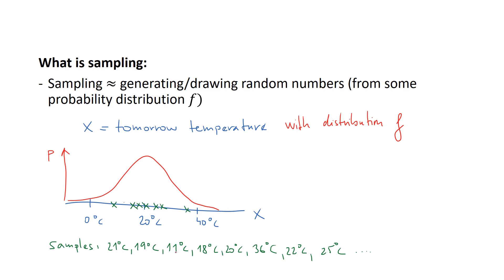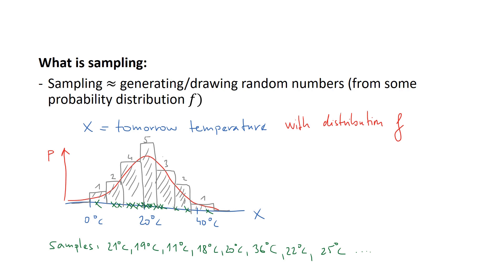Now if we do this enough times, we can bucketize the x-axis into buckets and count the number of samples in each bucket — here's one, here are two samples, here four, five, three — and we see a histogram that nicely matches the underlying distribution F. This is the idea of what sampling is: generating random numbers according to some probability, or the way I like to think about it, materializing the random variable.